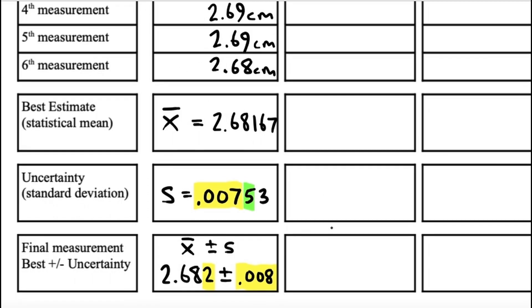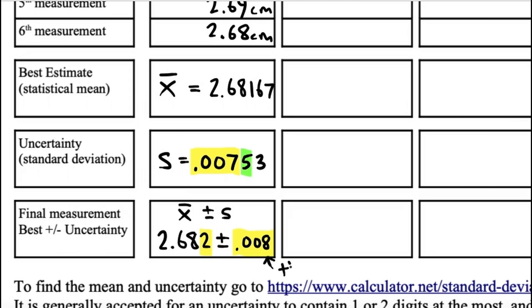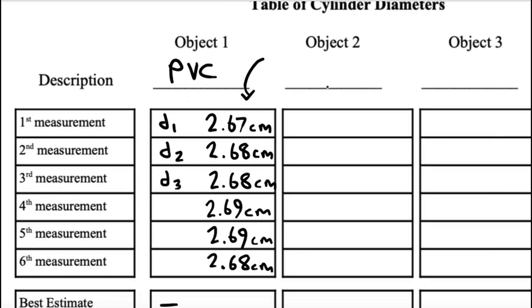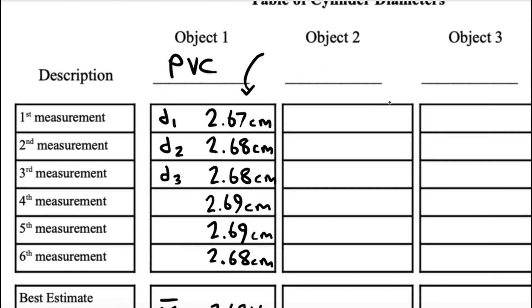So your uncertainty should be rounded to just one sig fig in most cases. You could do 2 in some cases, and that would be reasonable, but never more than 2 generally. Because my most important digit here for the standard deviation was in the thousandth place, I actually used his friend next to him, the 5, to round my 7 up to an 8. And that's all I gave as my uncertainty. I'm just using the most important digit. And then also, I wanted to round my best estimate to the same place value that my uncertainty is in.